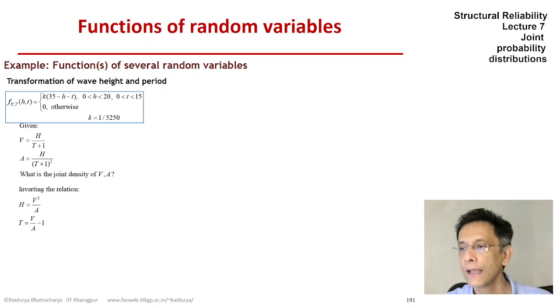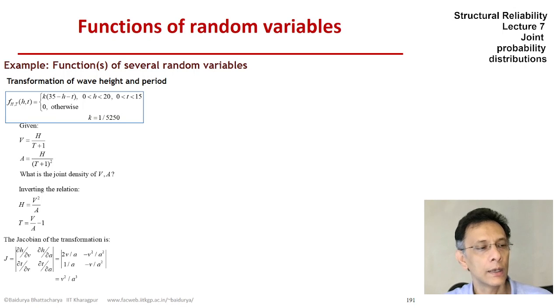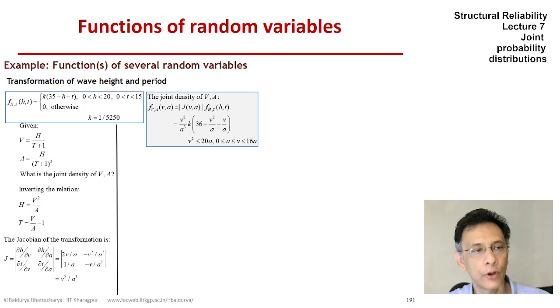So we proceed as before and we invert the relation first and then obtain the Jacobian of the transformation. So we can do the calculus and the Jacobian is v squared divided by a squared divided by a cubed. Now because the way we have defined the Jacobian, f of v a is equal to the Jacobian times the f of h t. And if you do the algebra, then we get the functional form as you see on the screen.